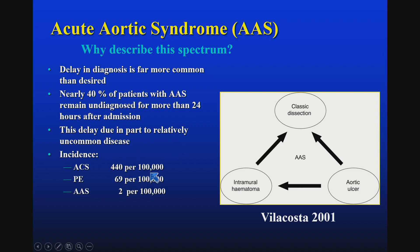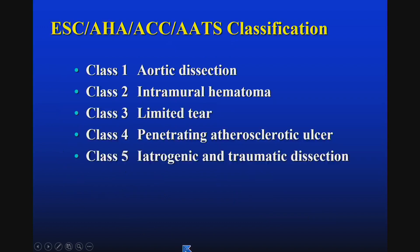This delay is largely due to the fact that acute aortic syndrome is a relatively uncommon disease compared to acute coronary syndrome, which has an incidence of about 440 per 100,000 patients, and PE, which has an incidence of about 69 per 100,000, whereas acute aortic syndrome is only 2 per 100,000.